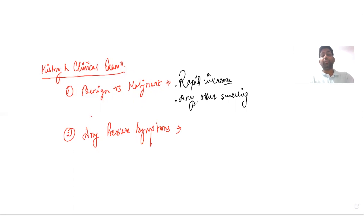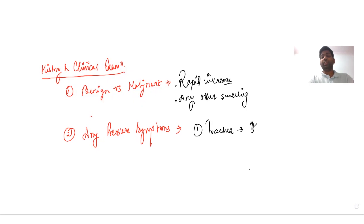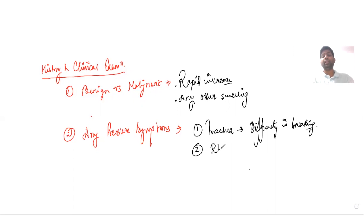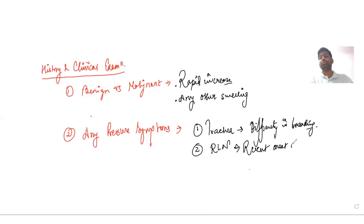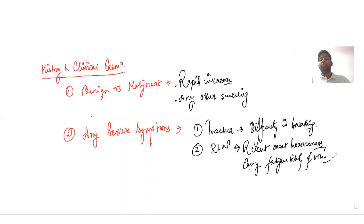The next important point in history is whether the patient is having any pressure symptoms. Structures that may get compressed by a thyroid swelling include: first, the trachea — compression leads to shortness of breath and respiratory distress; second, the recurrent laryngeal nerve — the most commonly compressed nerve — whose compression leads to recent onset hoarseness of voice and easy fatigability of voice, with loss of the timbre of the voice.